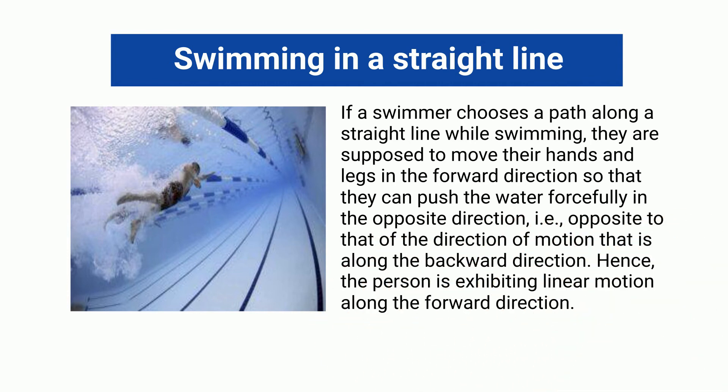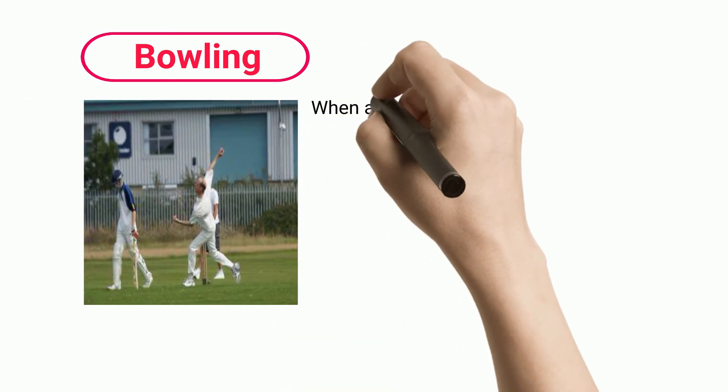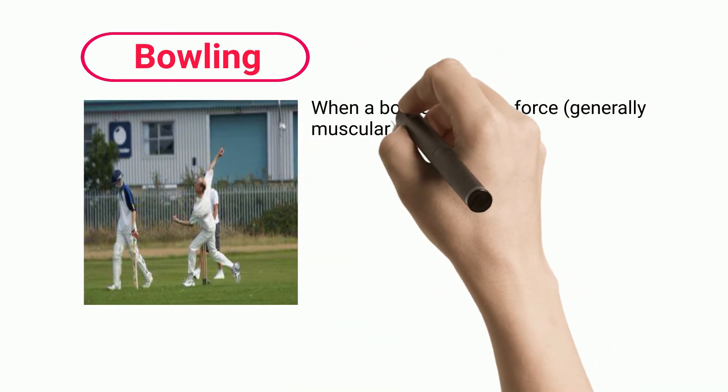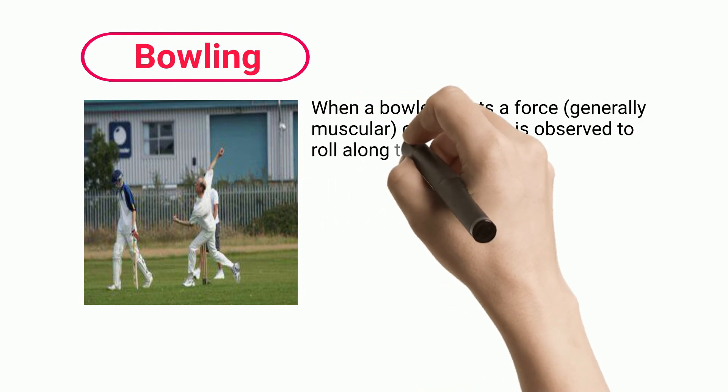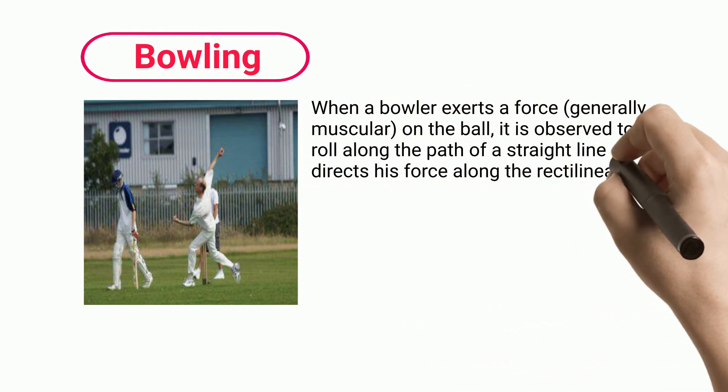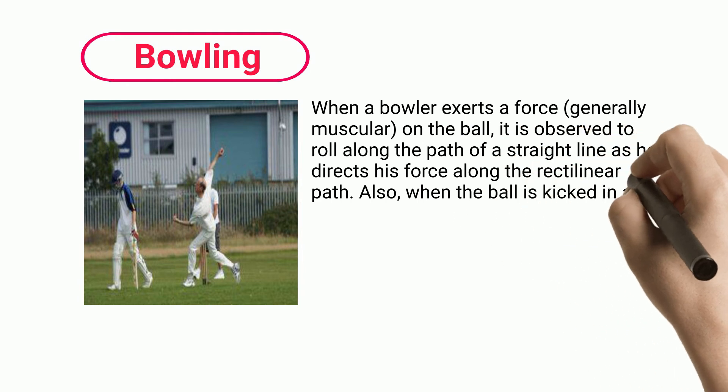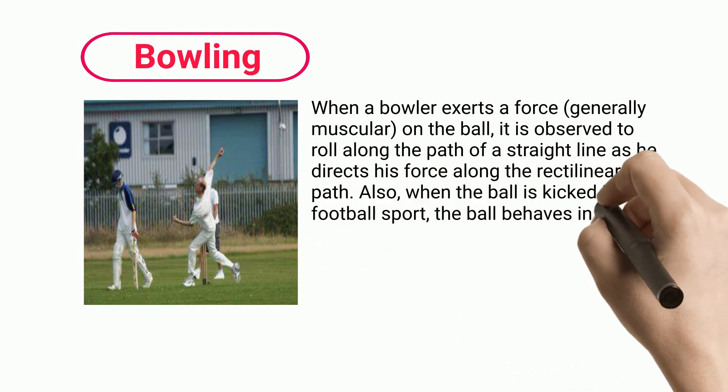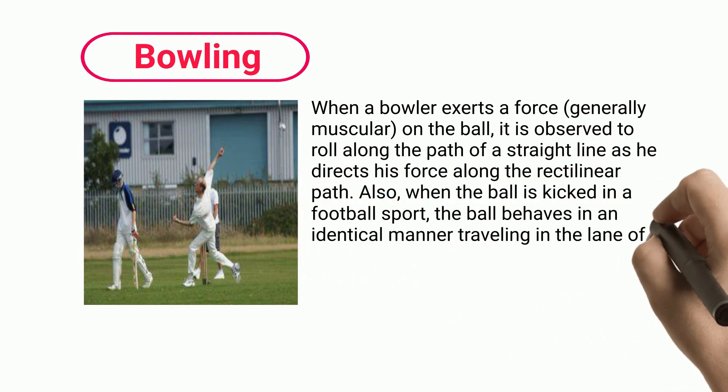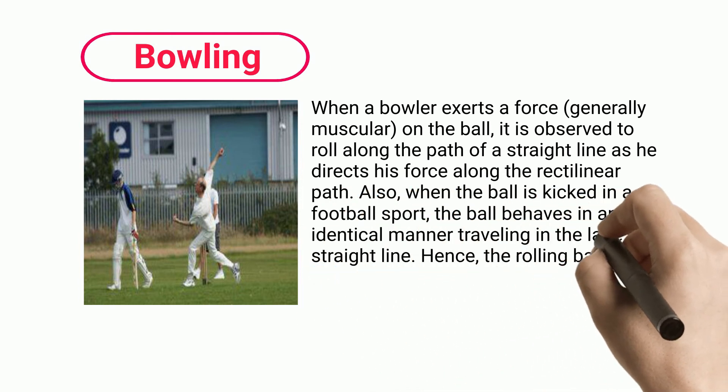Bowling: when a bowler exerts a force, generally muscular, on the ball, it is observed to roll along the path of a straight line as he directs his force along the rectilinear path. Also, when the ball is kicked in a football sport, the ball behaves in an identical manner, traveling in the lane of a straight line. Hence, the rolling ball depicts one of the best examples of linear motion in daily life.